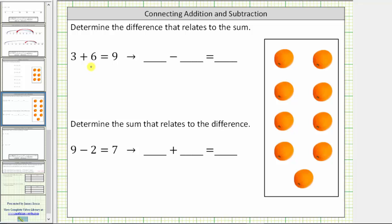Let's first model this sum using the oranges here on the right. Notice how we have a total of nine oranges. So for three plus six, we'll make a group of three and a group of six oranges. If we add or combine these oranges, we have a total of nine oranges.